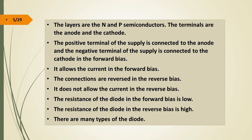In forward bias, the positive terminal of the supply is connected to the anode and the negative terminal is connected to the cathode. It allows current in the forward bias. The connections are reversed in reverse bias, and it does not allow current. The resistance of the diode in forward bias is low and in reverse bias is high.